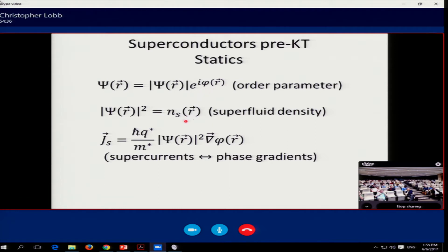The magnitude of psi squared isn't a probability now. But it's the superfluid density, the number of Cooper pairs per unit volume. And if we neglect the vector potential, but of course we can put all that back, the superfluid current is proportional to the gradient of the phase of the order parameter.